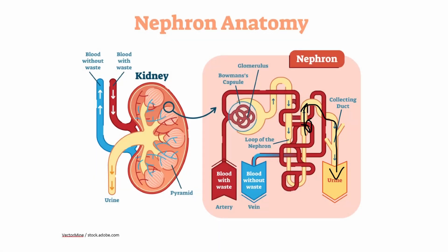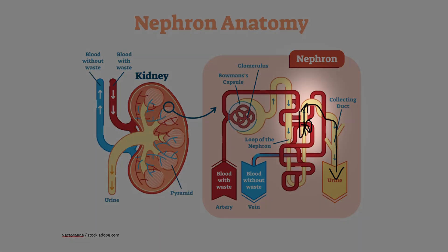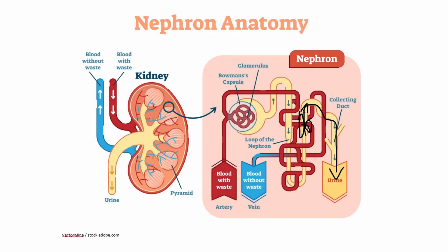Something really interesting that's also going to happen with furosemide is that it stops the sodium potassium pump from working. This changes the electrical charge on the cells here in this thick ascending limb in the nephron, so that calcium and magnesium cannot get through.